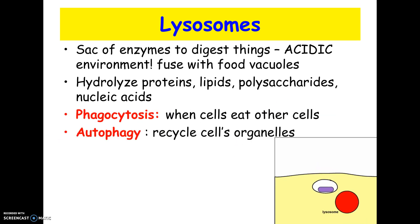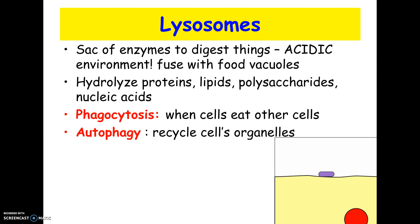In our body, lysosomes serve two specific roles. One is phagocytosis — when a cell eats other cells. White blood cells literally eat and destroy bacteria, and the digesting happens in the lysosomes. The second is autophagy — where cells digest themselves, breaking down organelles that are worn out. Make sure you know both: phagocytosis and autophagy.